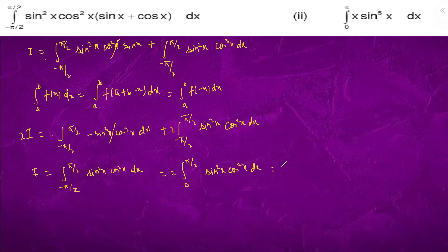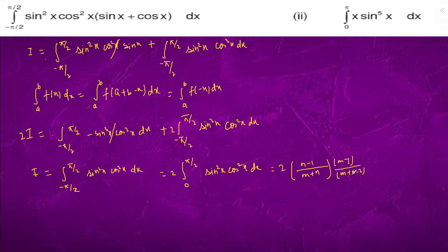So using Wallis' theorem, m is 2 and n is 2. We have m plus n, and we have n minus 1. We should note that m plus n minus 2 should not be 0. So m plus n is 4, and 4 minus 2 is 2, then 4 minus 4 would be 0, so we won't go up to that point.